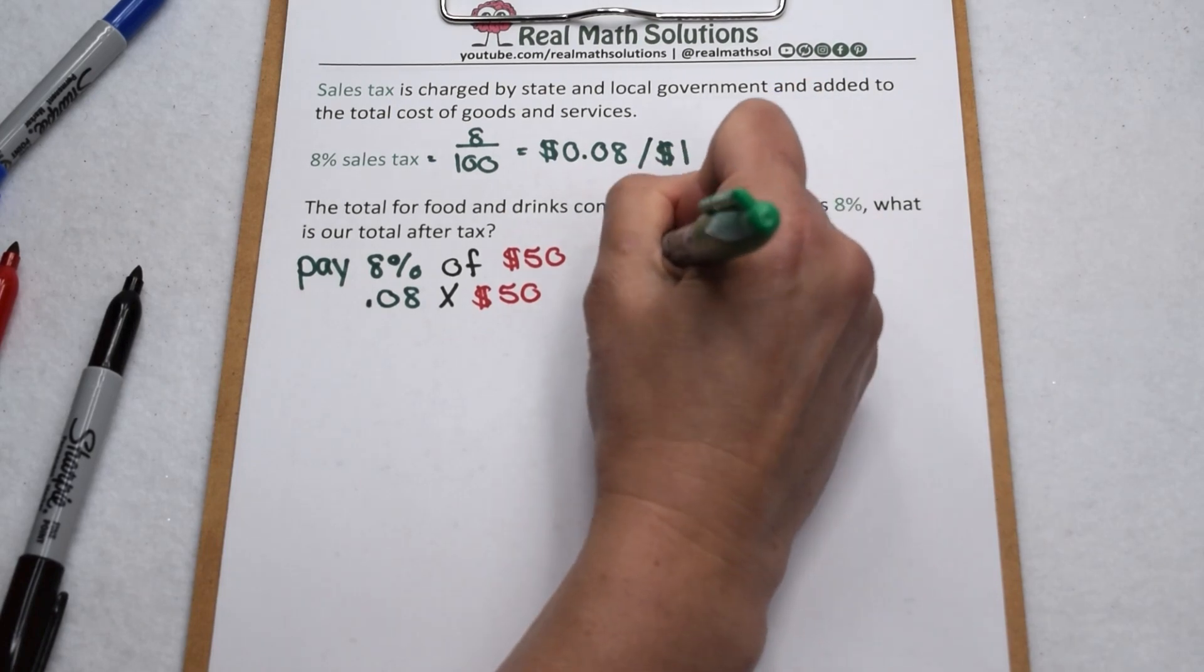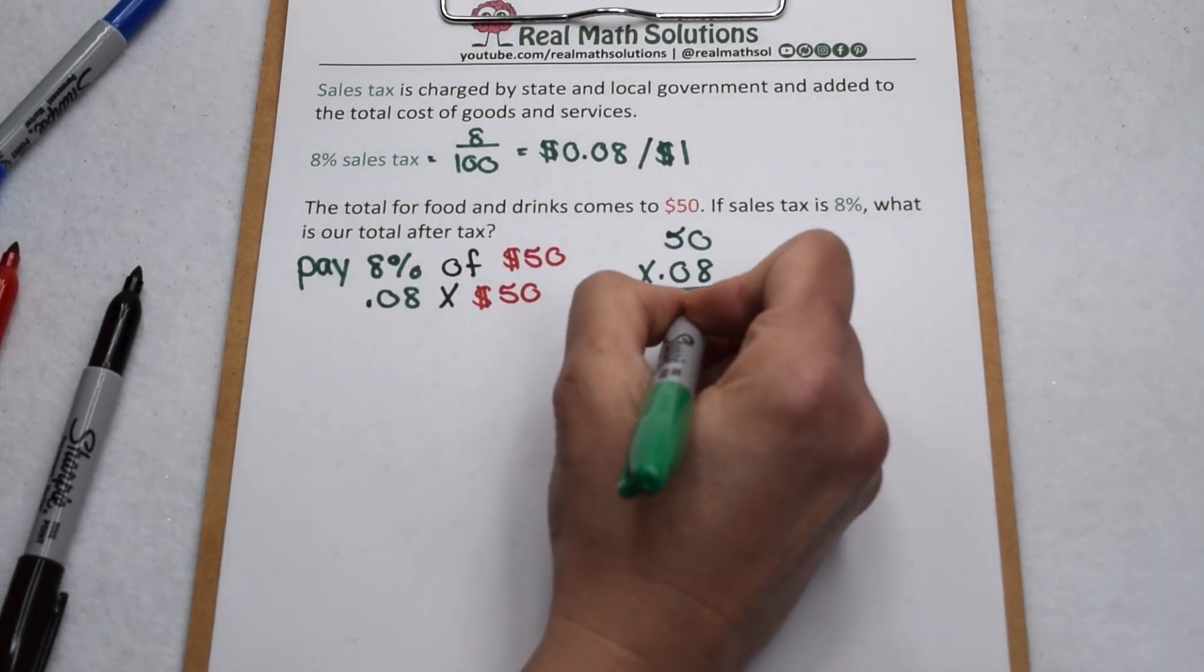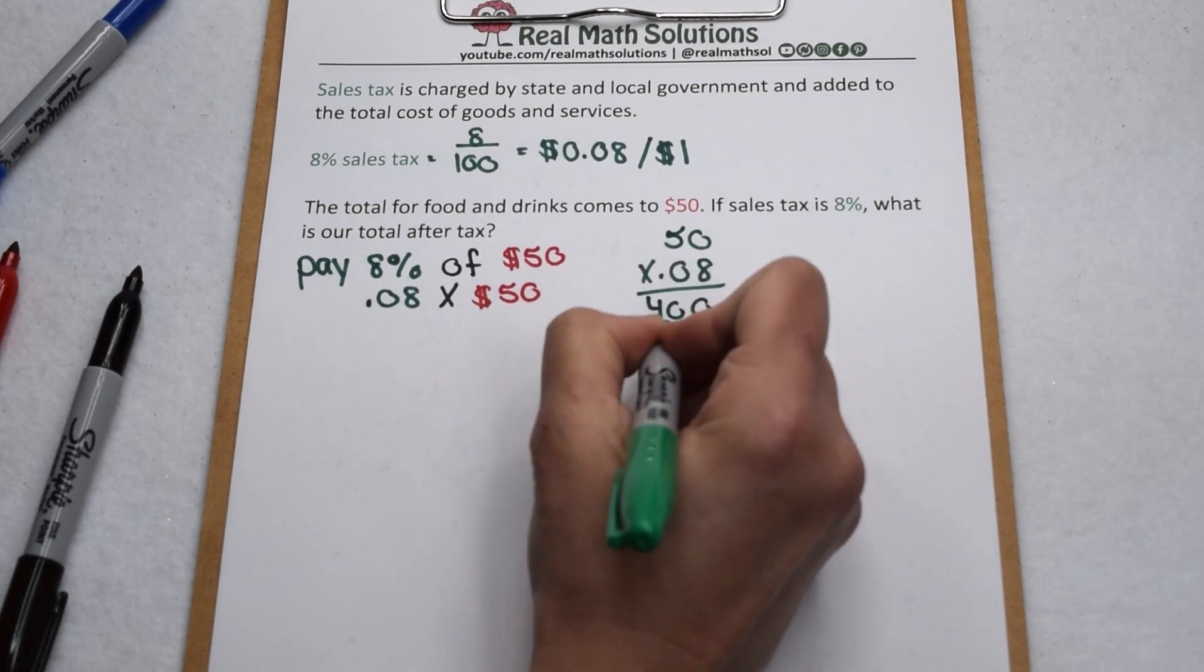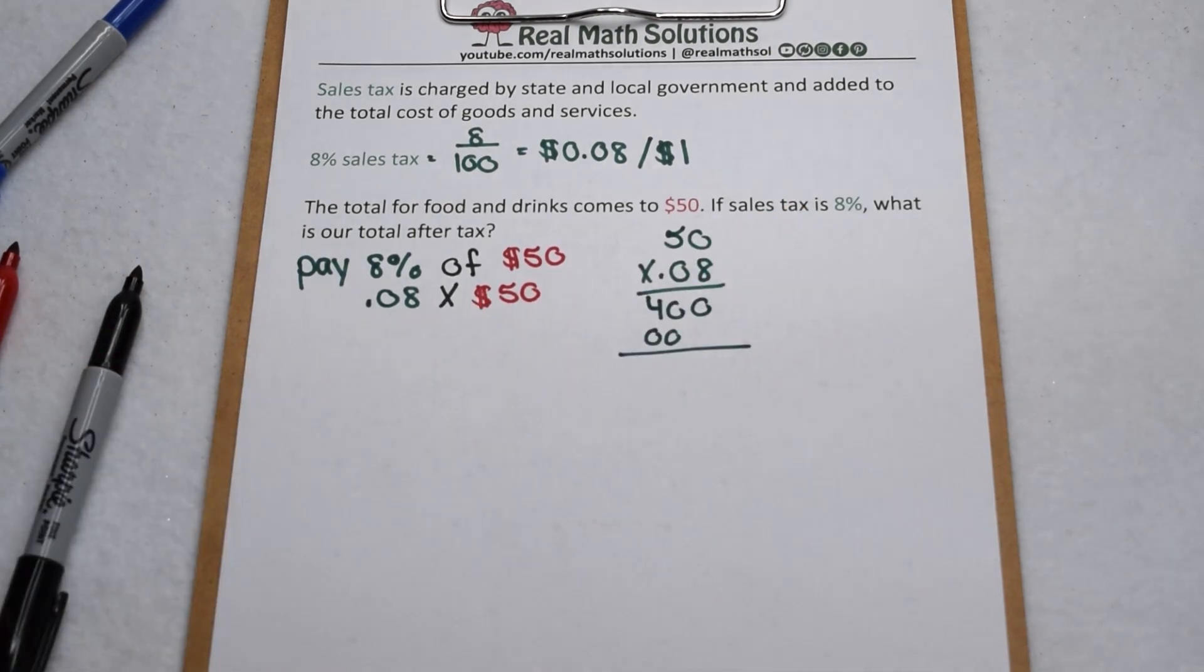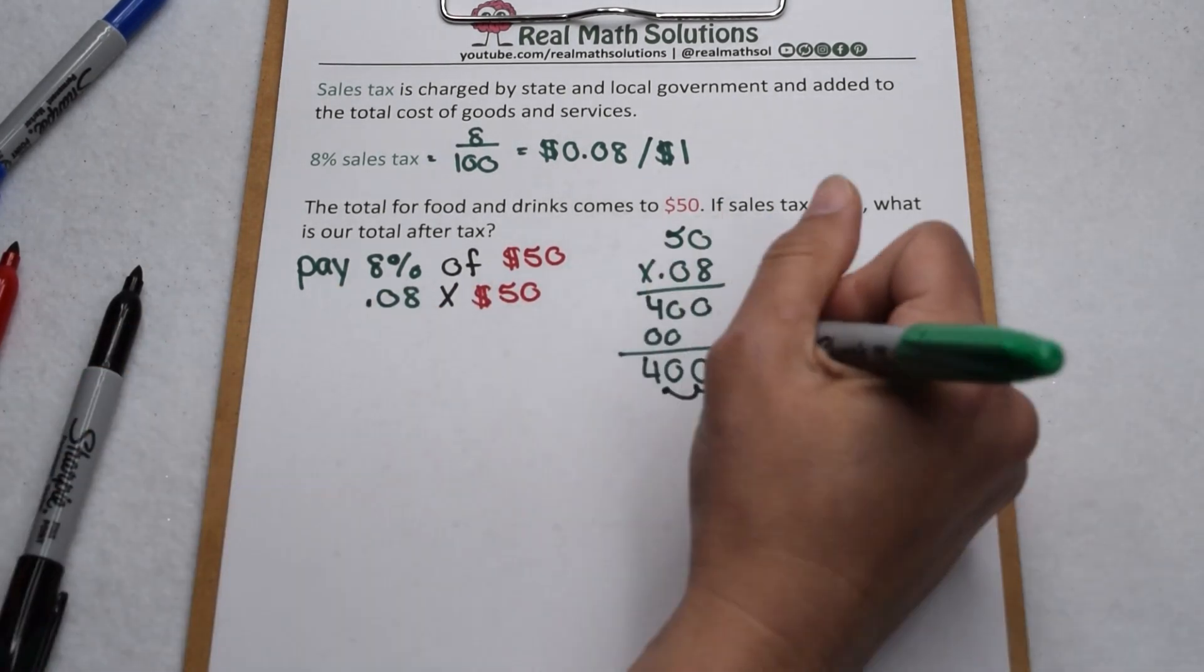When we work that out, we have 50 times 8 hundredths. When we multiply that out, 0 times 8 is 0, 5 times 8 is 40, and there's our second row of zeros. Add those together, that comes out to be 400. Place our decimal, two decimal places in our factor, so two decimal places in our product. That means we're going to have to pay an additional $4 on our total to cover sales tax.